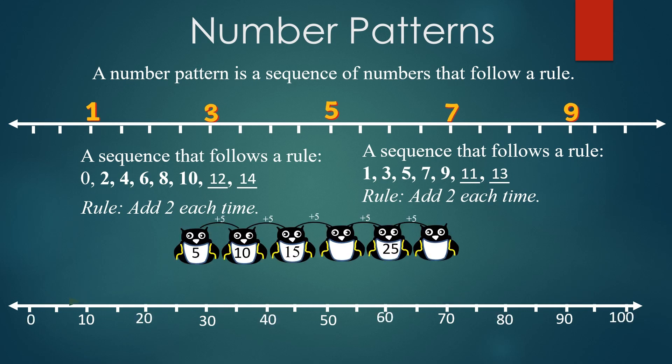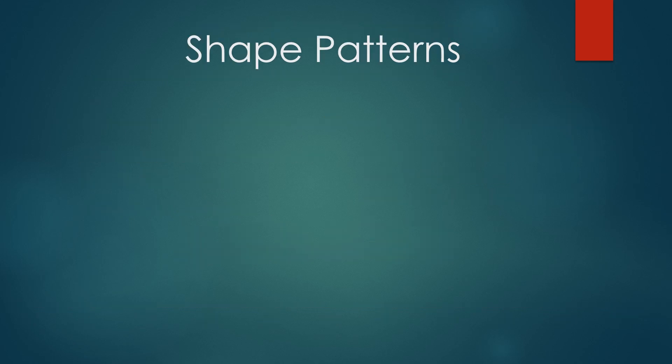Now take one more example. The number line is now showing 0, 10, 20, 30. So what is the rule here? The rule is add 10. And here one more example: 5, 10, 15, 25 is given and the rule is plus 5 — you have to add 5 every time. So here there are two vacant spaces. When you add 5 to 15 you get 20, and 5 to 25 will give you 30.